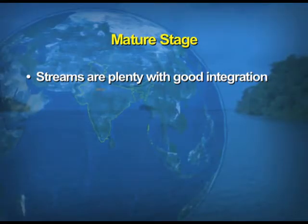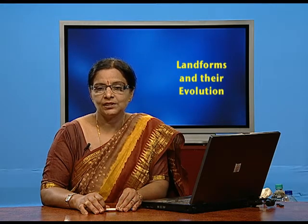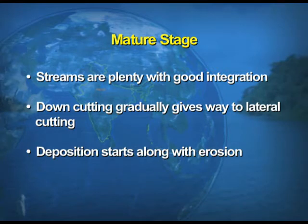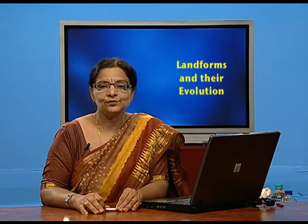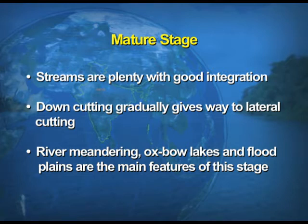In the maturity stage of the river, the streams are plenty with good integration. Unlike the youthful stage, the river does the downcutting and gradually gives way to lateral cutting. Deposition starts along with the erosional work. The important features formed under this stage are river meandering, the oxbow lakes, the flood plains, etc.